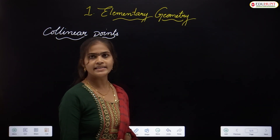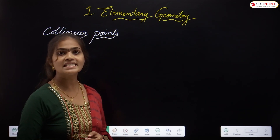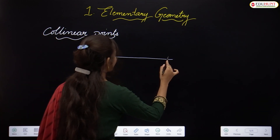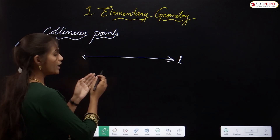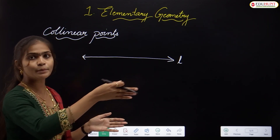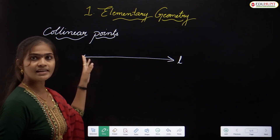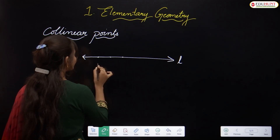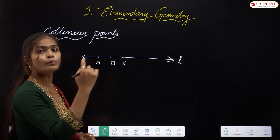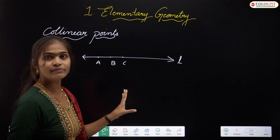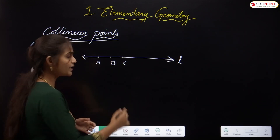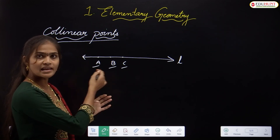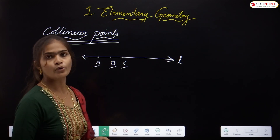Next is collinear points. Collinear points means three or more points that lie on the same line. On a straight line, we can place infinitely many points. So, if three or more points A, B, C lie on the same straight line, then we call those points collinear points. Here, points A, B, and C are collinear points because all three lie on the same straight line.